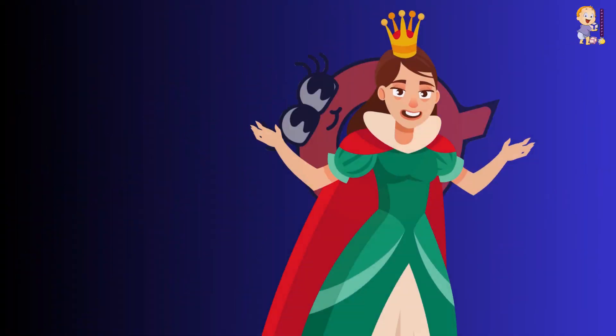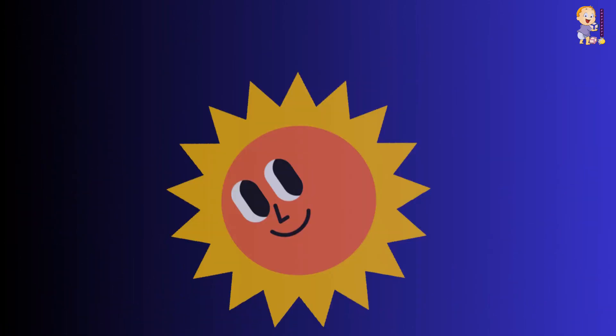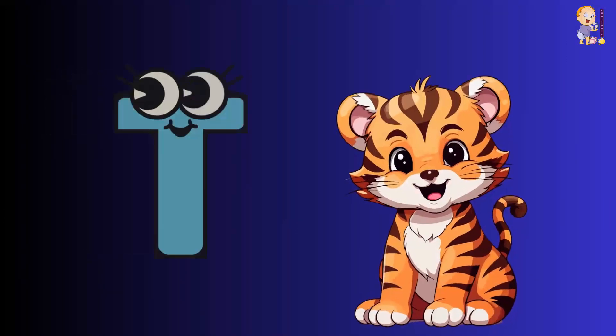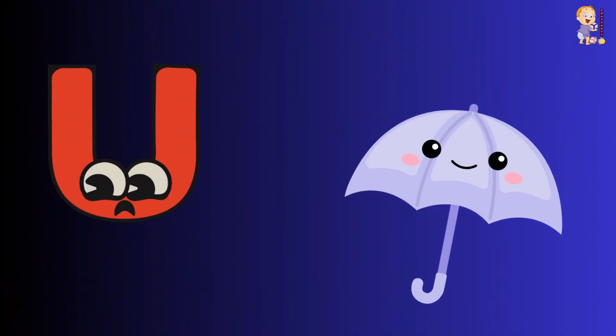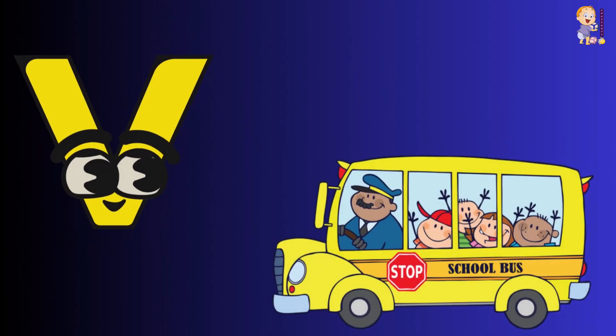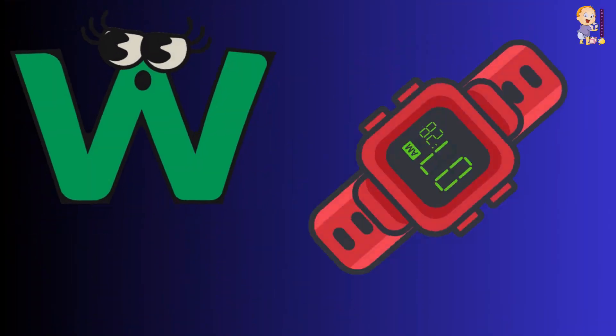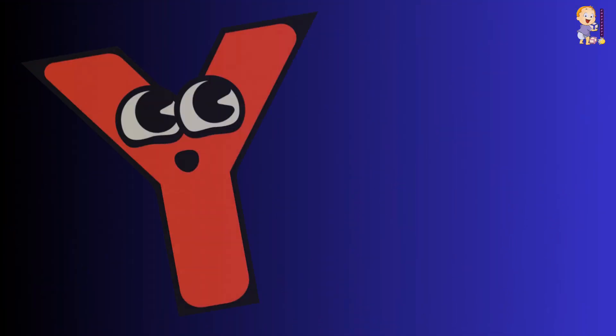Q Coins, R Rat, S Sun, T Type, U Umbrella, V Van.